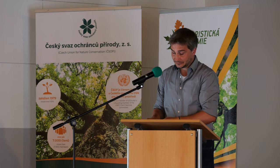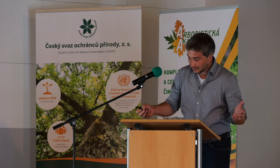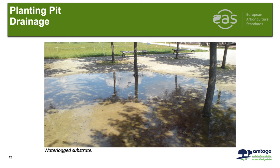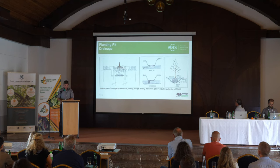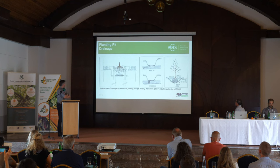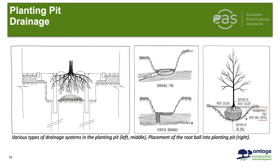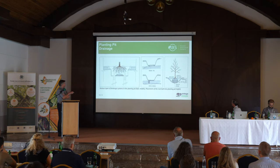Compacted soil in the planting pit creates drainage problems — the tree is essentially crying for air. You can use various types of drainage systems in the planting pit: on the left, drainage tubes going straight down; on the right, vertical drainage or horizontal placement relative to the root ball. Use whatever drainage approach allows maximum drainage.